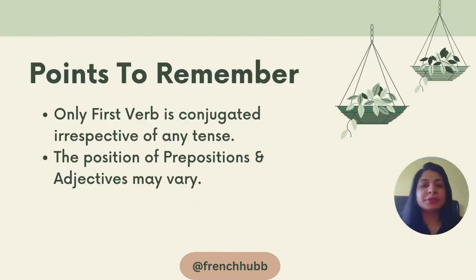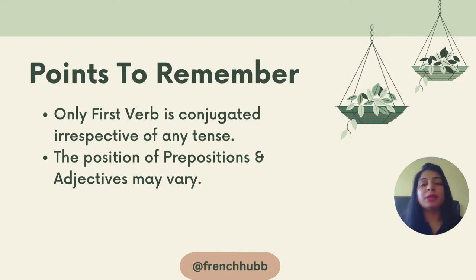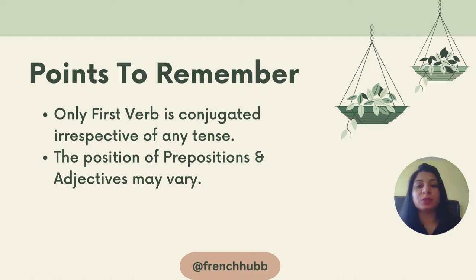There are a few key points to remember while making sentences in French. Only the first verb is conjugated — you will never conjugate the second verb, irrespective of any tense. The position of prepositions and adjectives may vary: many prepositions come before the noun and some come after, and the same applies to adjectives. Make sure you keep a proper list of exceptions in both cases.